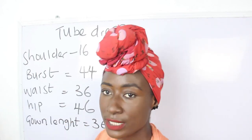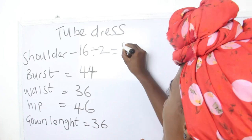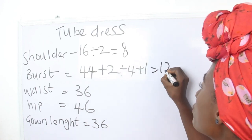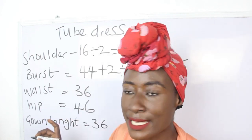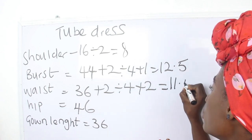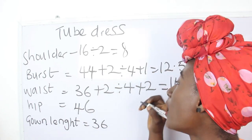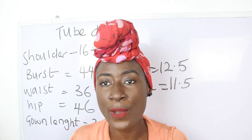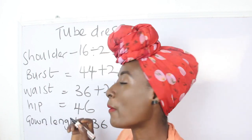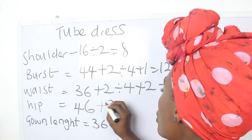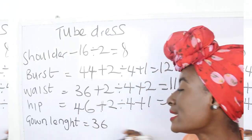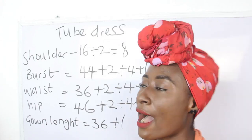So we have our shoulder which is 16 divided by 2, giving us 8. Our bust is 44 plus 2 divided by 4 plus 1, giving us 12.5. Our waist is 36 plus 2 divided by 4 plus 2, giving us 11.5. The reason for the plus 2 on the waist is because we are going to have our dart there. Our hip is 46 plus 2 divided by 4 plus 1, giving us 13. Our gown length is 36 plus 1 for sewing allowance, giving us 37 inches.